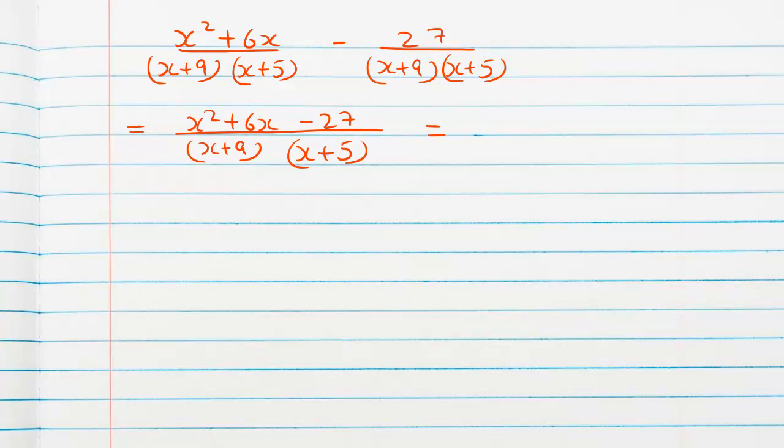We need two numbers that their product should be negative 27 and the sum should be 6, such as 9 times 3 should be 27. 9 minus 3 is 6. As you can clearly see, 3 has a negative sign, so our factors will be x plus 9 times x minus 3.